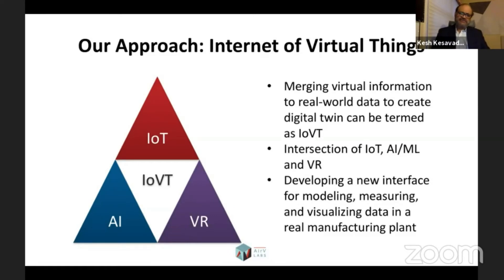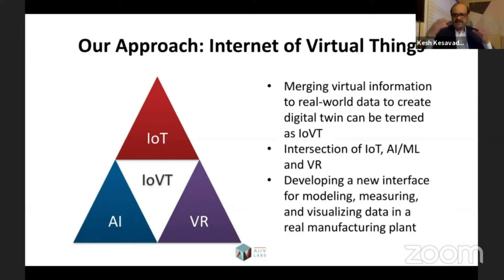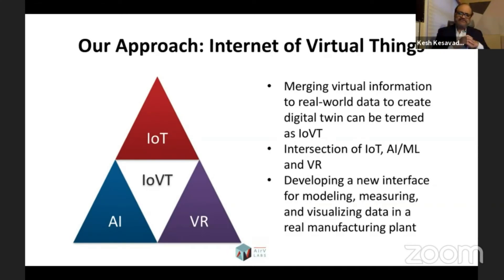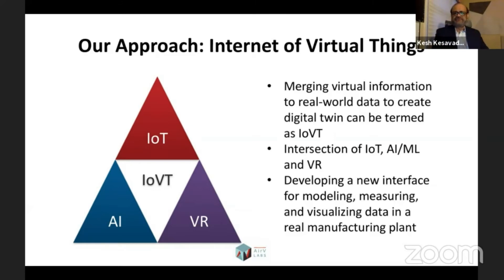Building digital twins is a big concept that many large organizations including IBM are trying to push. We've been thinking about what a digital twin actually is from an IoT perspective — integrating AI and virtual reality information together. When we merge all of them, what we get is not just an Internet of Things but an Internet of Virtual Things. The concept is that incoming data can be used for modeling, visualizing, and gaining insight into a company that pure sensor data alone cannot provide.